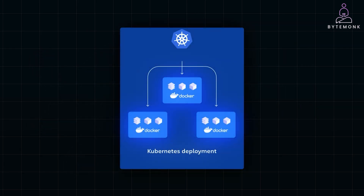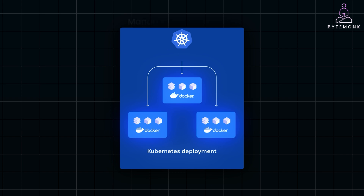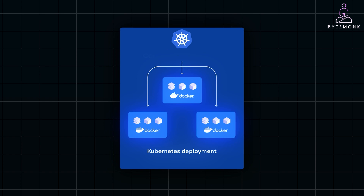As your applications grow, you don't want to manually manage hundreds of containers across various machines. Kubernetes is an open-source platform that automates this process. It helps you manage, scale, and deploy containerized applications easily across a cluster of machines. Think of Kubernetes as a container orchestrator — it automatically handles tasks like container scaling, load balancing, and self-healing, so you don't have to.